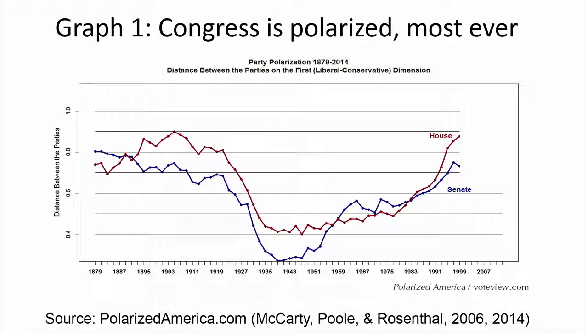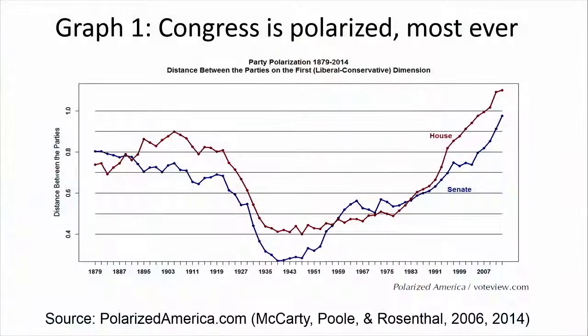I stopped the graph there in 2000, just as we reach the super high levels that we were at after the Civil War. It couldn't really get any higher — we couldn't be worse than the decades after the Civil War, could we? But as you all know, the years since 2000 have been steadily up, up, up. Congress just gets more and more polarized. Political scientists are in full agreement that our political elites have gotten very, very polarized.